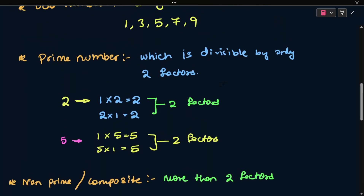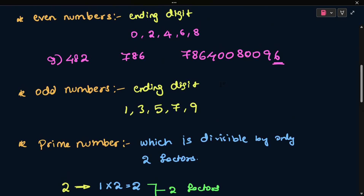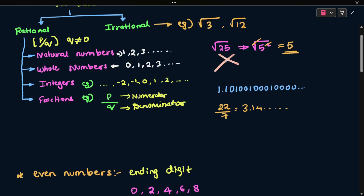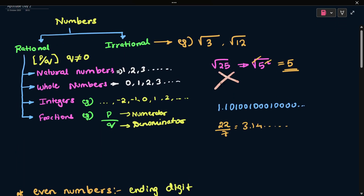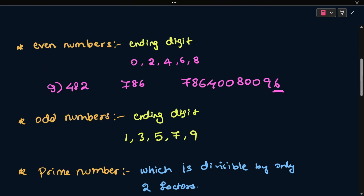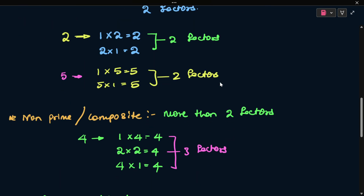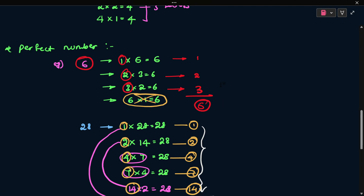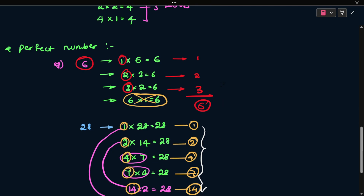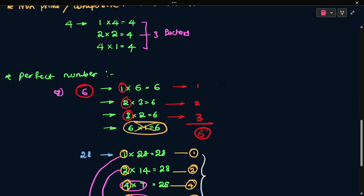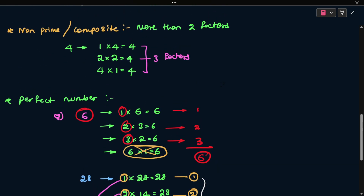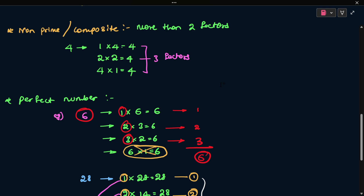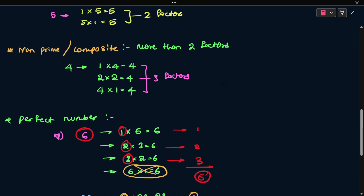This is the classification of numbers. To summarize: even numbers, odd numbers, prime numbers, non-prime or composite numbers, and perfect numbers. That's all for this class. Next class we will cover more important topics and some interesting facts. Thank you.